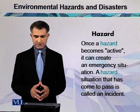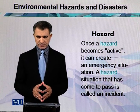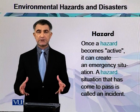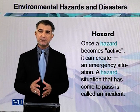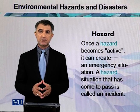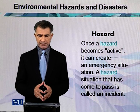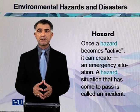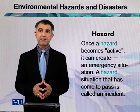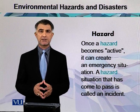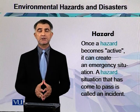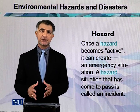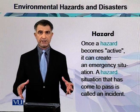Once a hazard becomes active, it can create an emergency situation. A hazard situation that has come to pass is called an accident, or we can say an incident. When it happens, we see the impact in the enclosed environment, and in that emergency we get active. During disaster or hazard, we take action, and then after the hazard, reconstruction and rehabilitation begins. It means that society is also involved.